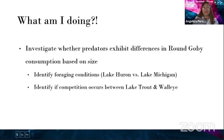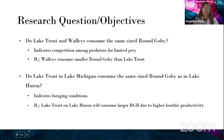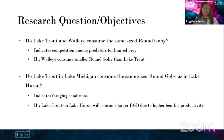I want to investigate whether predators exhibit differences in round goby consumption based on size, to identify foraging conditions between Lake Huron and Lake Michigan, and to identify if competition occurs between lake trout and walleye. My research questions are: do lake trout and walleye consume the same size round goby — which may indicate competition among predators for limited prey? An alternative hypothesis is that walleye consume smaller round goby than lake trout because walleye on average are a lot smaller. Also, do lake trout in Lake Michigan consume the same size round goby as in Lake Huron? An alternative hypothesis is that lake trout in Lake Huron will consume larger round goby due to higher benthic productivity, since Lake Huron is a lot more clear, allowing more sun to penetrate to the benthos.